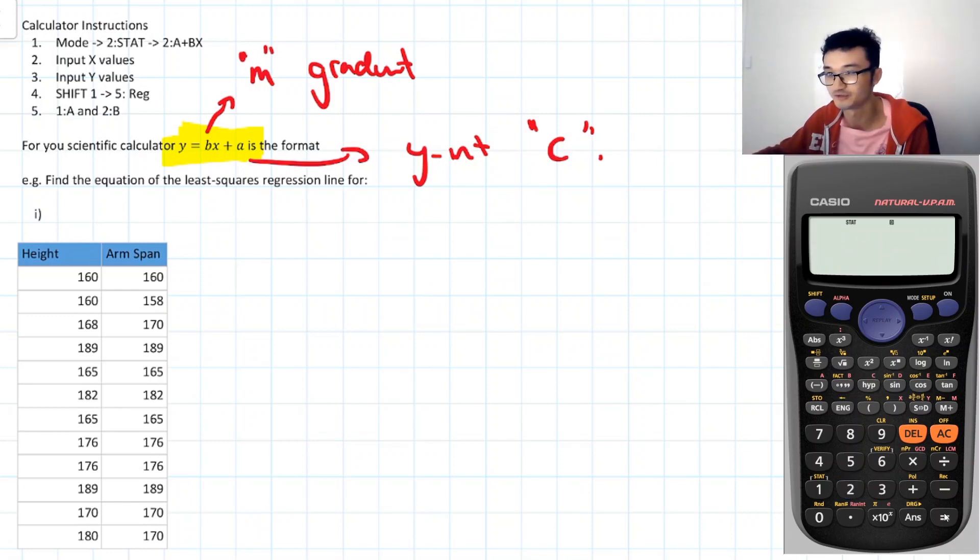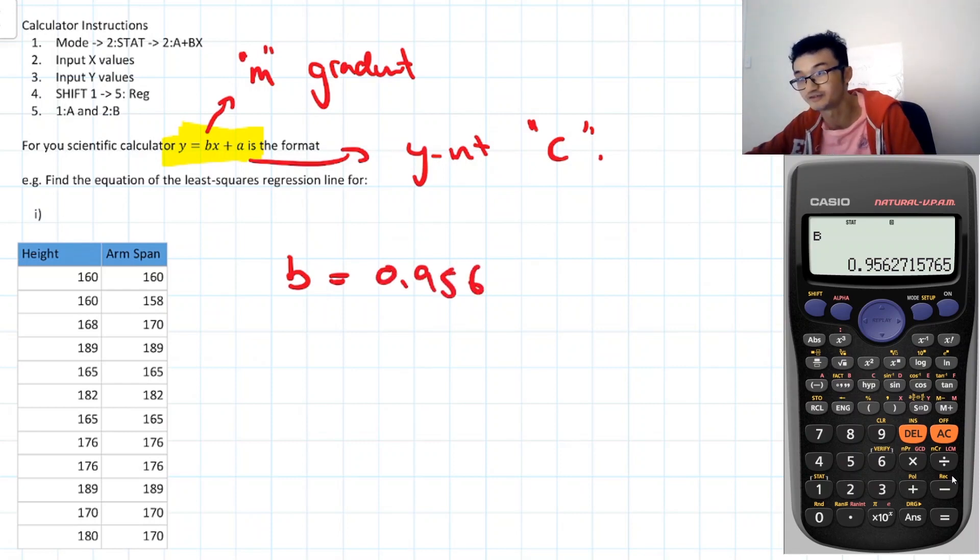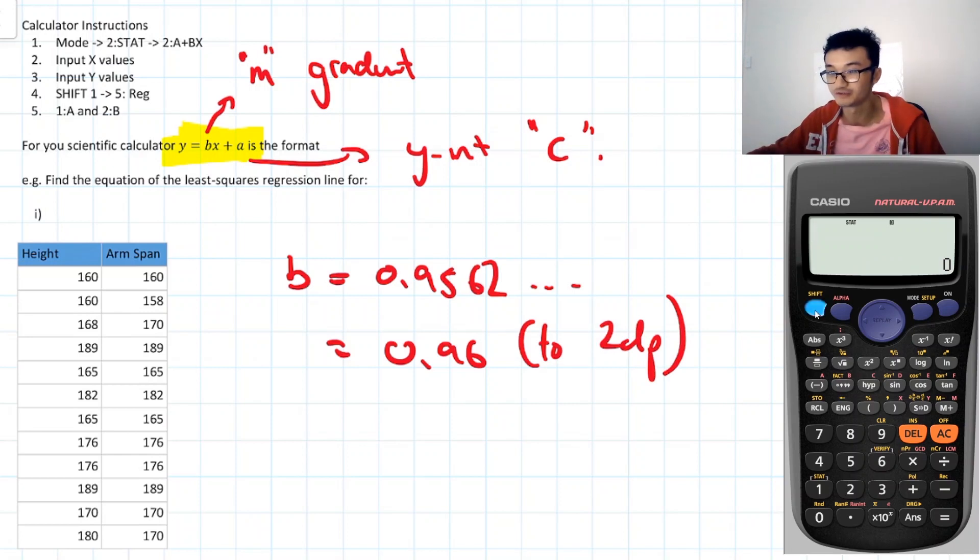So let's have a look. So the B value should hopefully be close to 1. Yeah, 0.95, that's not too bad. We can just round that off to however many decimal places we want. So the B is equal to 0.9562. Let's just go to 2dp, so 0.96.